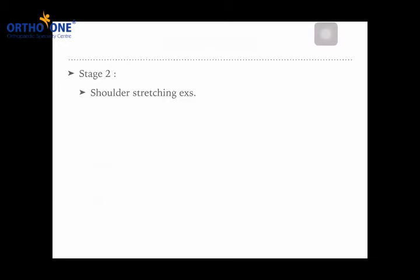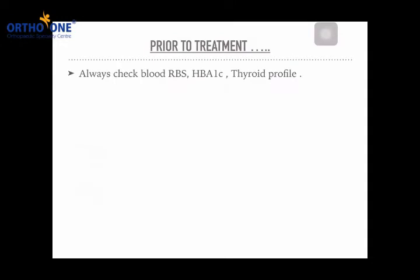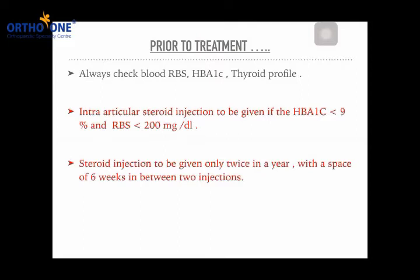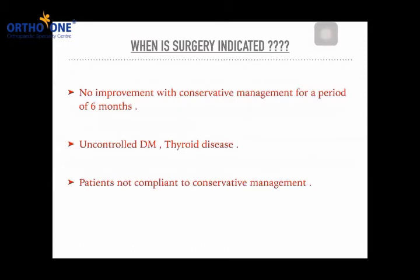In stage two, always concentrate on stretching exercises, and injections may help, but exercise is the main modality of treatment. Any patient not improving with treatment may end up having surgery. Before treatment, we must ensure the patient is not diabetic and that thyroid function tests are normal. Patients with diabetes or thyroid problems have a higher predisposition to shoulder stiffness. A patient's random blood sugar should be less than 200 for active intervention with an injection. Patients with uncontrolled diabetes or thyroid disease, or those non-compliant with conservative management, may require surgery.